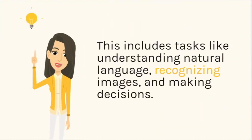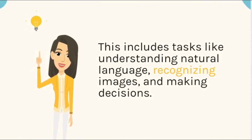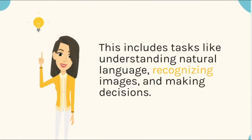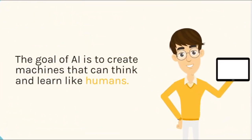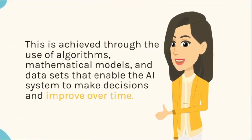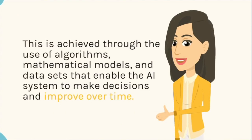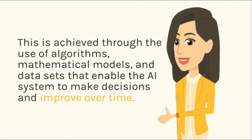This includes tasks like understanding natural language, recognizing images, and making decisions. The goal of AI is to create machines that can think and learn like humans. This is achieved through the use of algorithms, mathematical models, and data sets that enable the AI system to make decisions and improve over time.